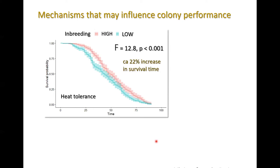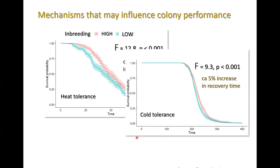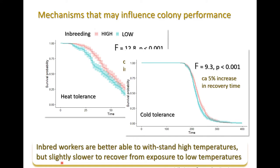I'm interested to hear any suggestions on why inbred colonies show higher heat tolerance. For cold tolerance, we measured recovery following maintenance at minus 5 degrees Celsius for a short period, then looked at how quickly ants woke up. Here we see a small but significant effect in favor of the less inbred colonies. So we do get effects from environmental variables such as heat and cold that influence survival — this is very much work in progress. Inbred workers are better able to withstand high temperatures but slightly slower to recover from cold temperatures.